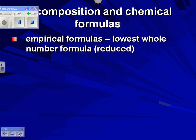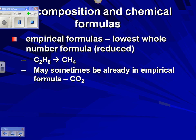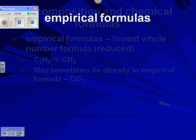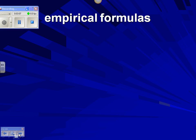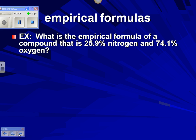An empirical formula is the reduced formula of a compound. We want to know its simplest form — for example, C2H8's empirical formula would be CH4. Sometimes, like carbon dioxide, the compound is already reduced, so CO2 is both its empirical and actual formula. The empirical formula could also be the actual formula.